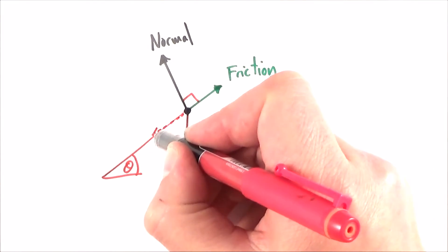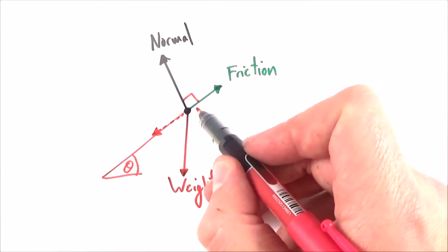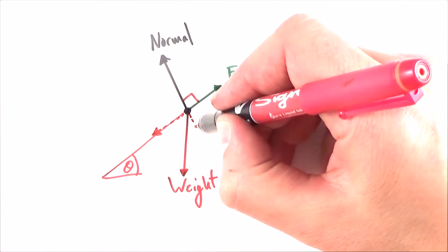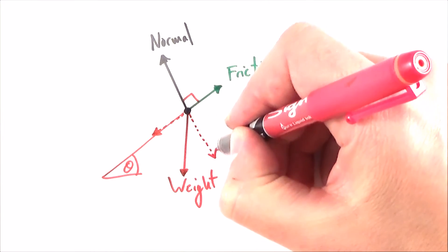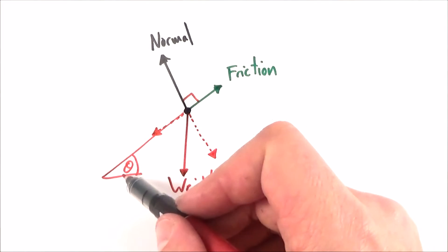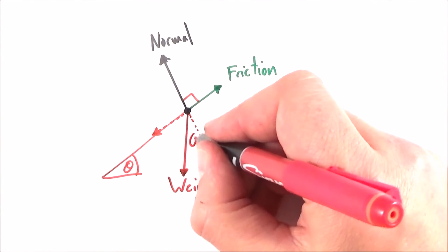What's important is if the object's in equilibrium, then there's no resultant force. That means the component of weight that acts down the slope is equal to the size of the frictional force acting up it. There's also going to be a component of this weight which is acting at 90 degrees to the slope, which is going to be the same amount as the normal force.